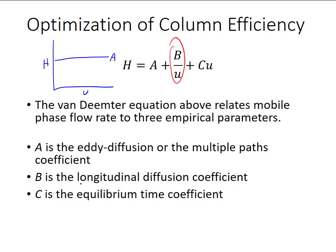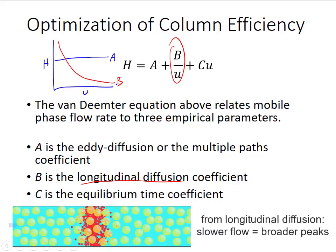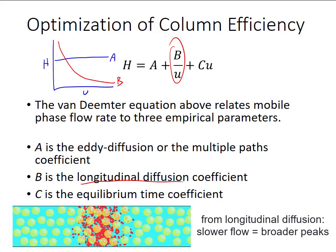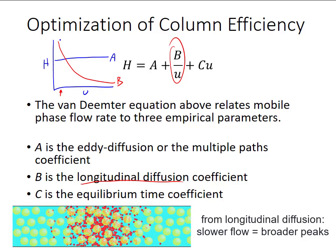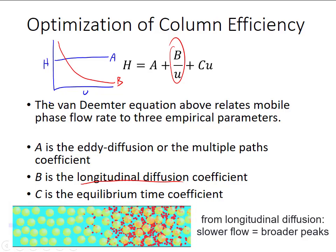Next we can look at parameter B, the longitudinal diffusion coefficient. The relationship between parameter B and flow rate is hyperbolic, because parameter B describes the result of a particle diffusing during separation. The longer an analyte remains in the mobile phase, the more time its initially narrow band has to diffuse outward from its central high-concentration region. A peak will start out very sharp and will always become broader over time. When your flow rate gets very slow, this longitudinal diffusion results in greater peak broadening when the peaks finally elute.